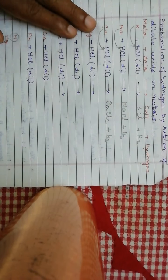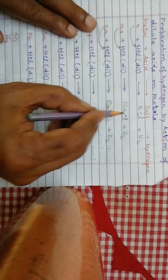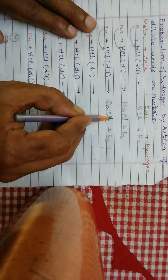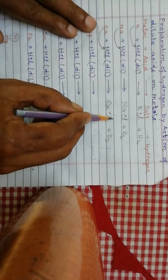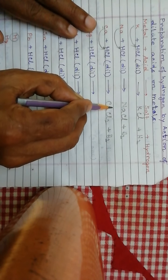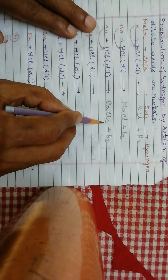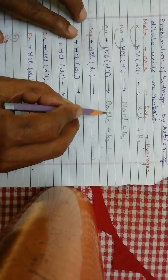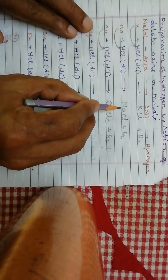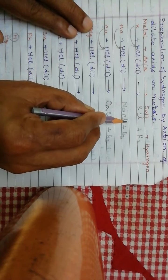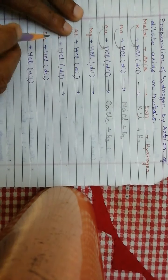Here you must consider valency when you write down the formula of the salt. For example, the valency of calcium is 2 and the valency of chlorine is 1. Using the cross method it becomes calcium chloride, CaCl₂. In the case of sodium chloride, both sodium and chlorine have valency 1, so it becomes NaCl.